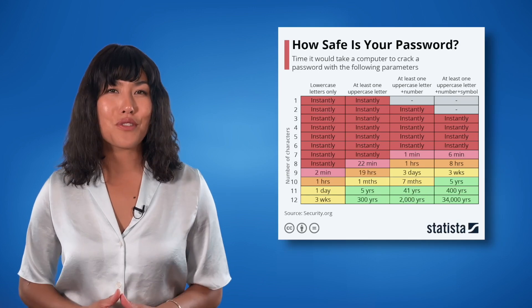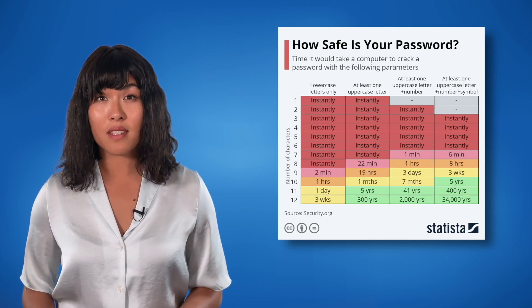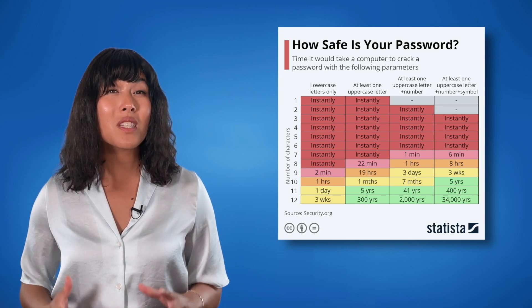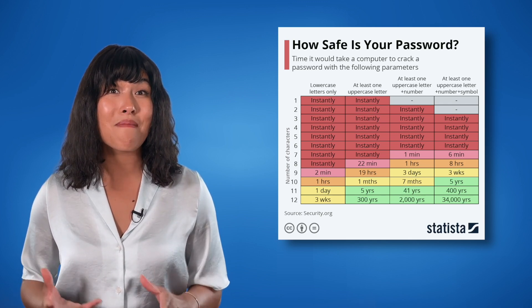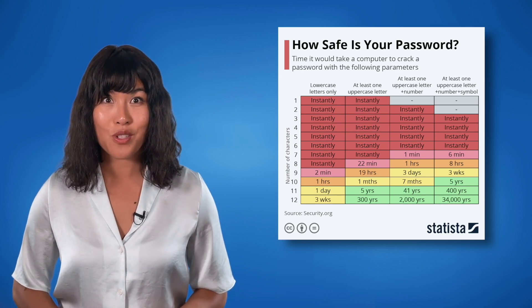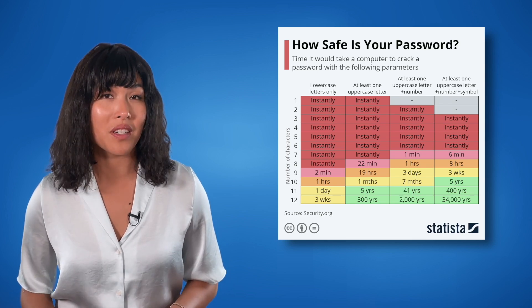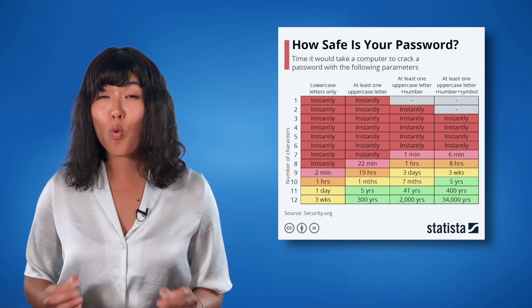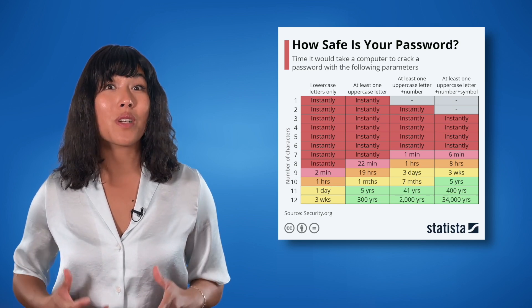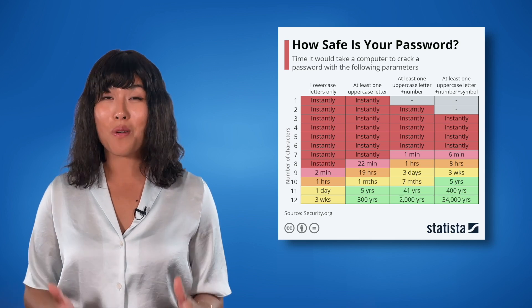Take a look at this chart. If you create a password that is only lowercase letters, you can have up to eight different characters in your password and it will still be guessed correctly immediately if a hacker uses advanced password cracking tools. However, if you increase your password to 12 characters and use at least one uppercase letter, a number, and a symbol, that time increases to 34,000 years for someone to guess your password.